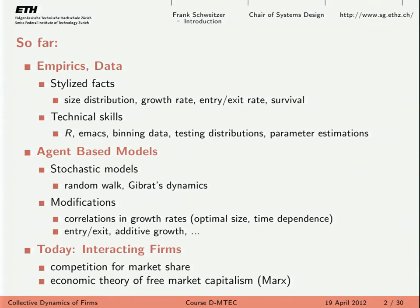What have we done until now? We were talking about stylized facts — the statistical regularities that we observe when looking into firm data. You'll recall the distributions about firm size, firm growth, the relation to the age of the firm, all about volatility and these issues. Then we tried to understand this by providing models able to reproduce these stylized facts. We started with a very simple class of stochastic models.